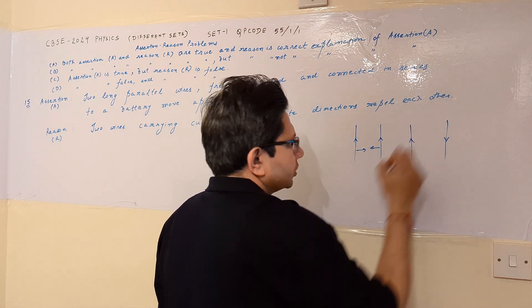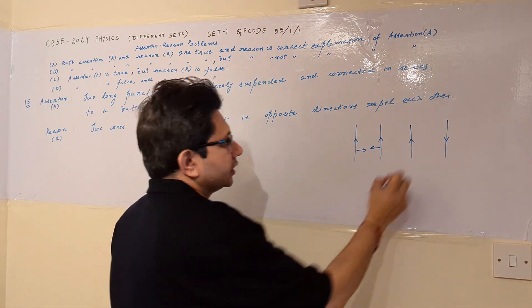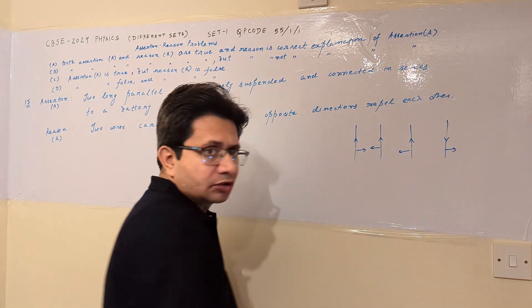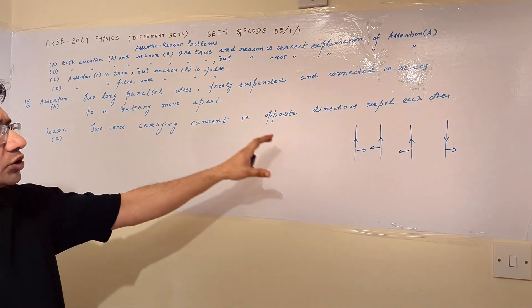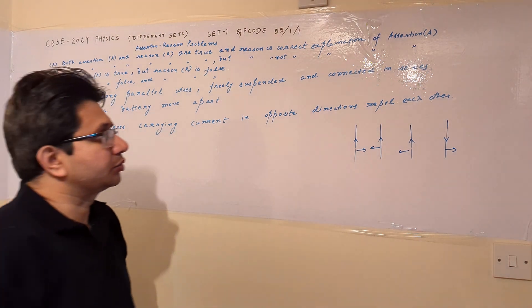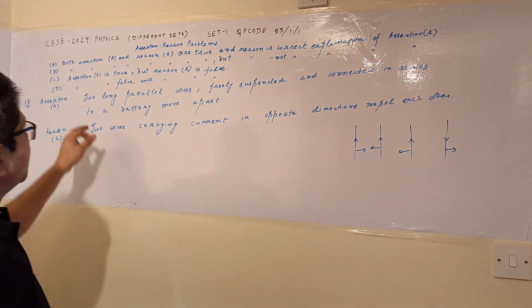So we can say that the reason is correct - two wires carrying current in opposite directions repel each other. This is a correct statement.